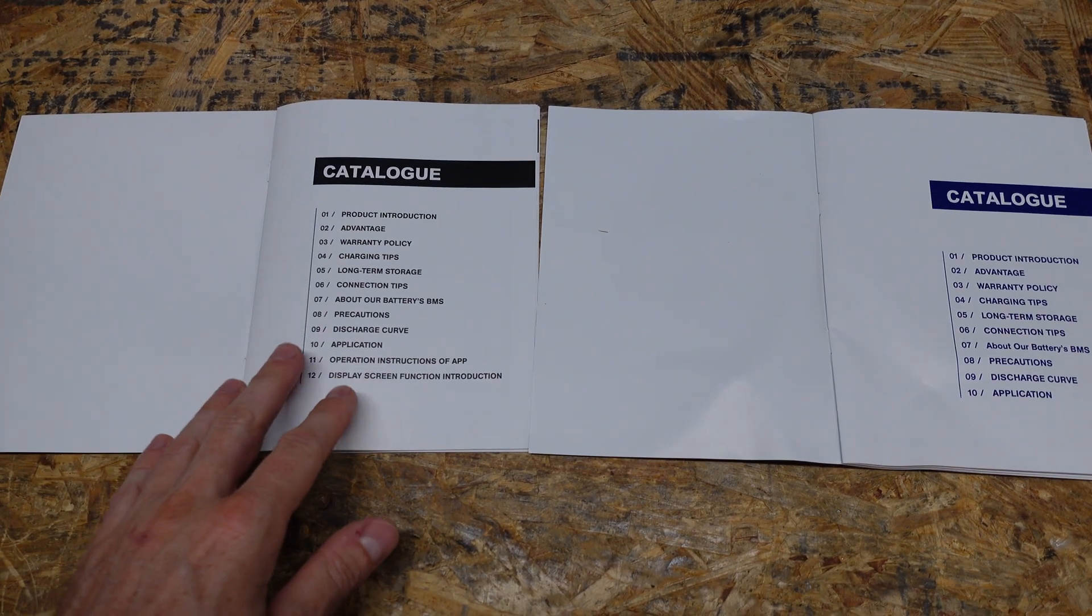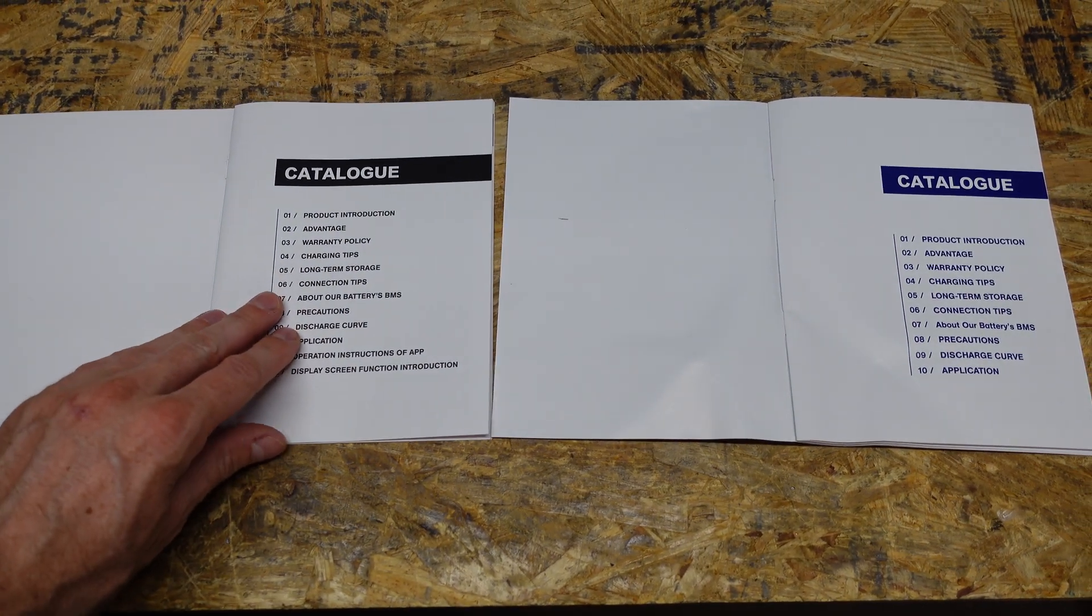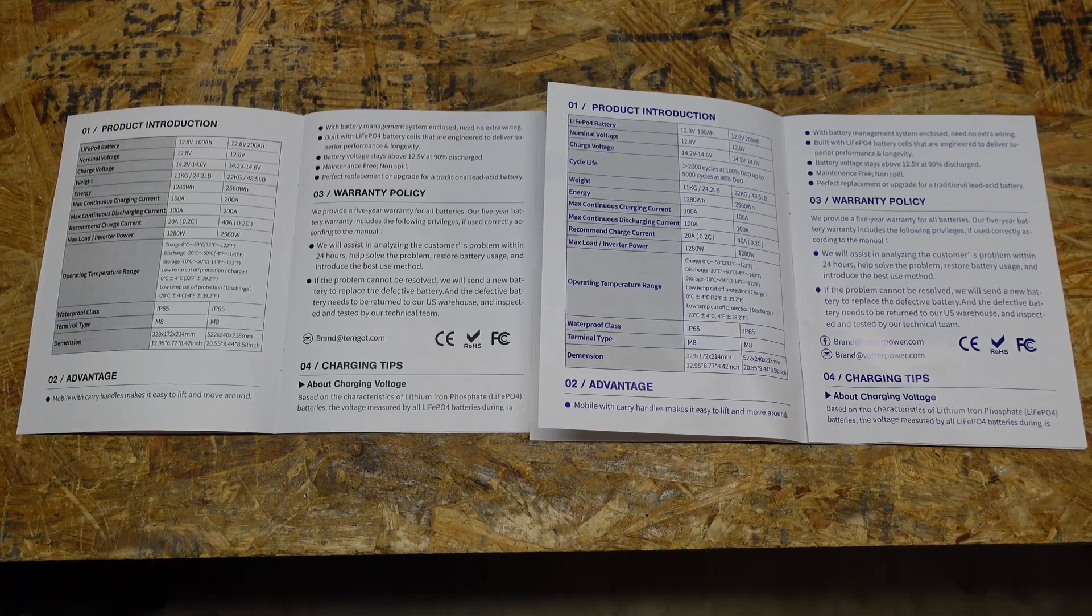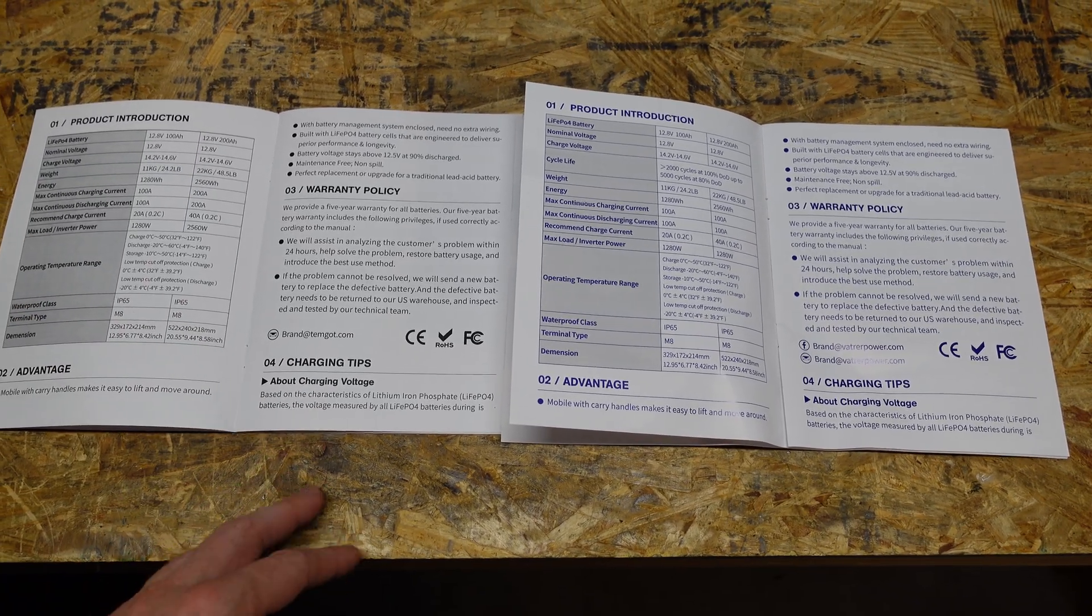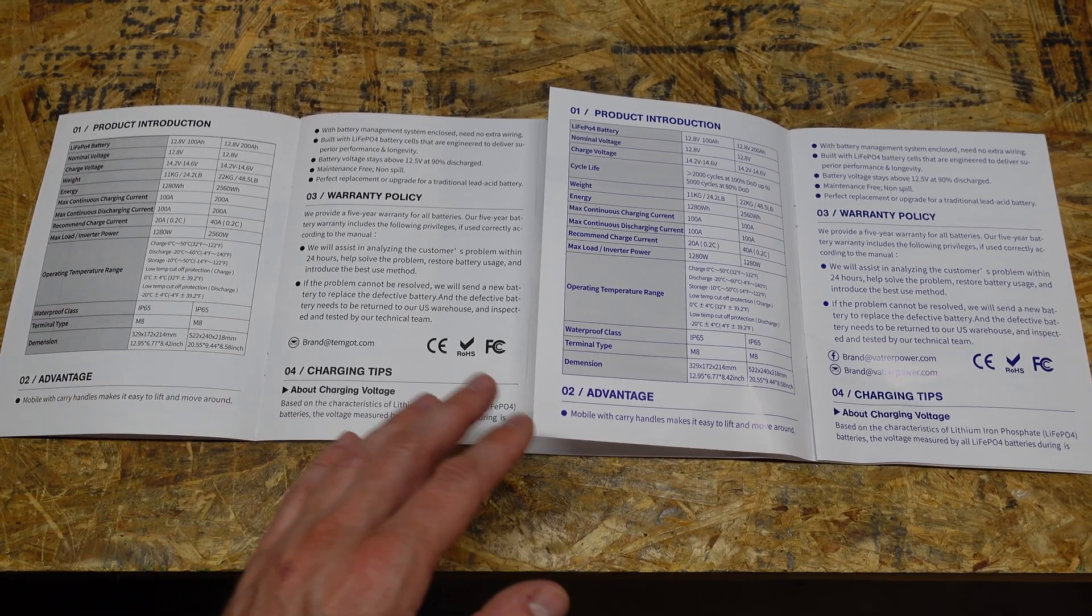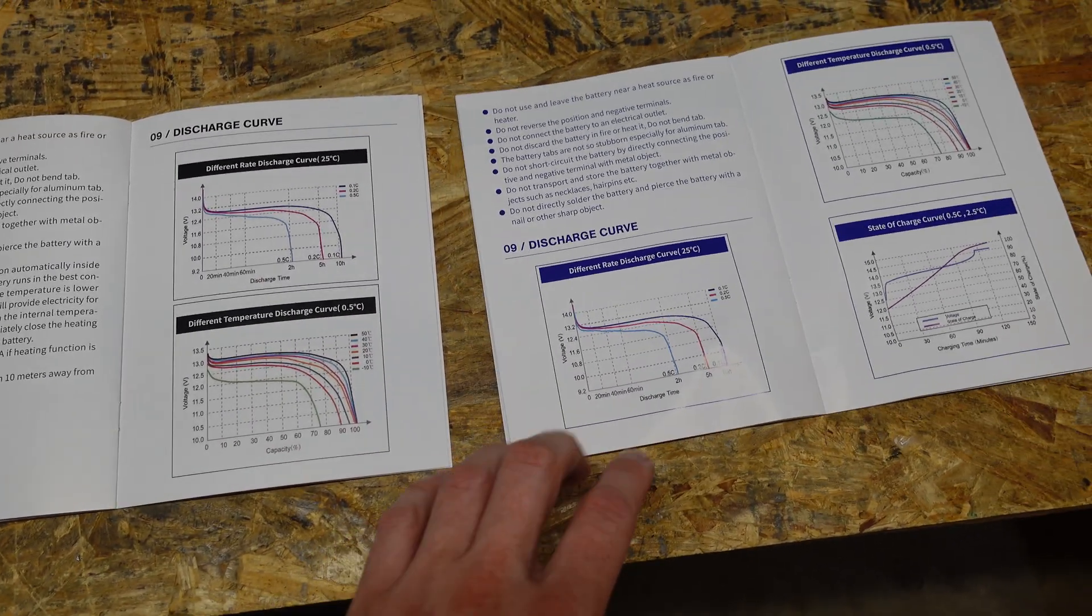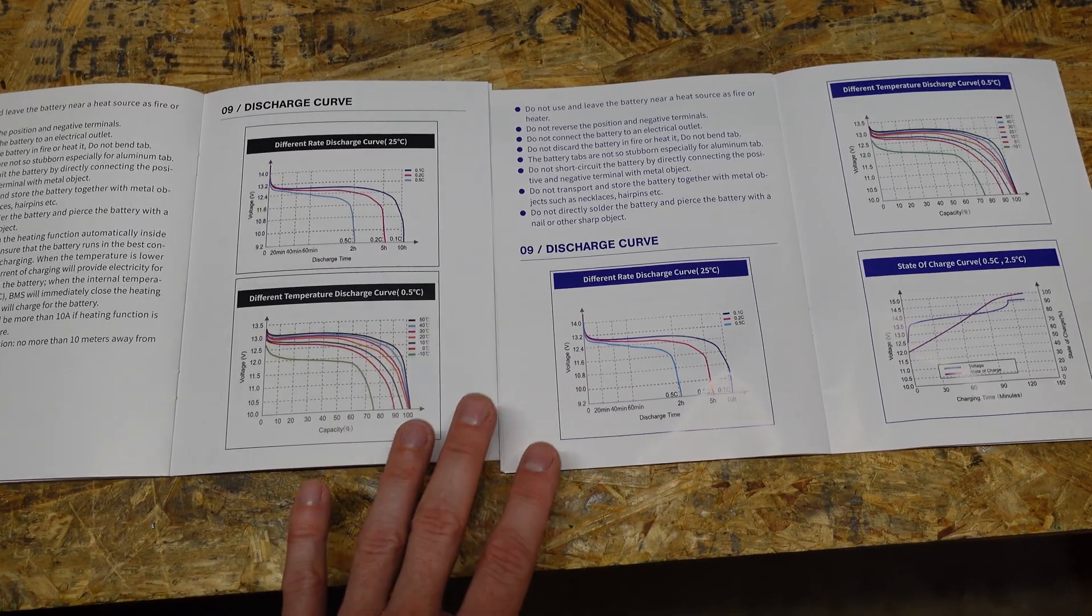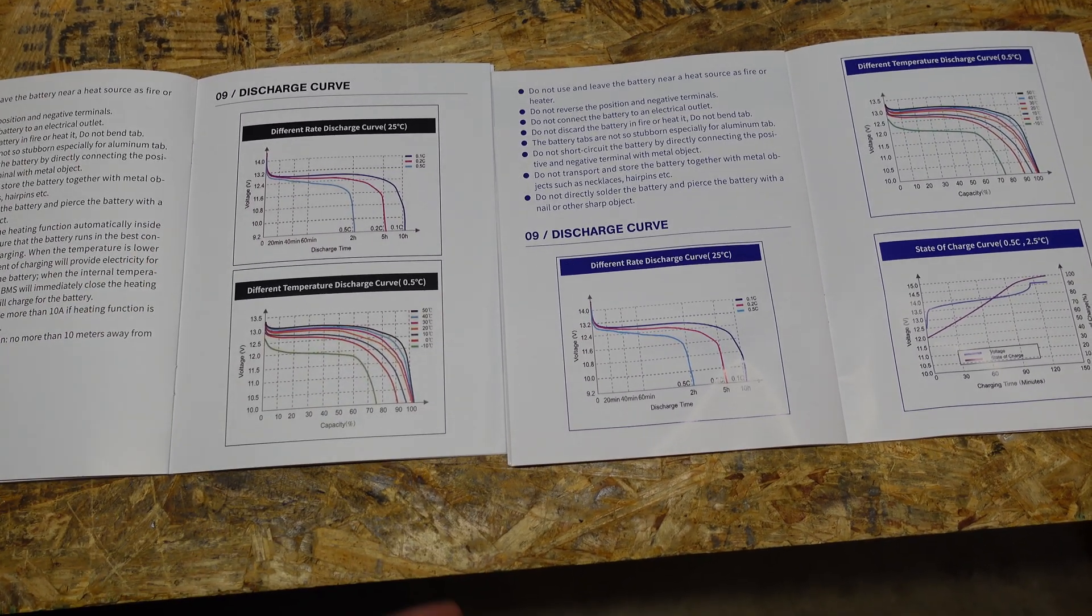Taking a look at the inside of each manual they're near identical. This paper on the Temgat feels quite a bit thicker. If we go to the second page it's again near identical - it's almost like one company takes something that's publicly available and just copies and pastes certain information and brand names. These discharge and temperature graphs are exactly the same graphs, like they just copy and pasted from one another.